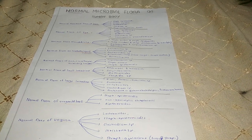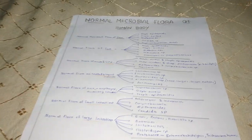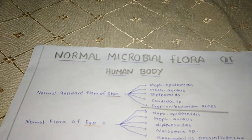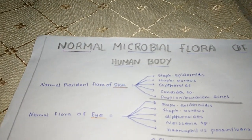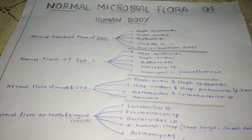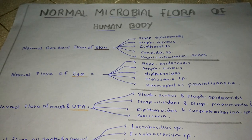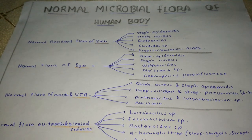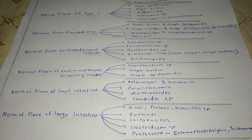Hello friends, today we will learn about normal microbial flora of the human body. The term normal microbial flora refers to the microbial population that inhabits the internal and external surfaces of healthy normal humans and animals.